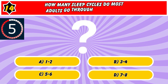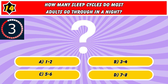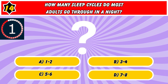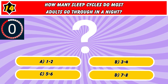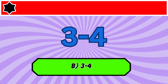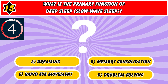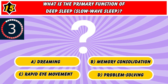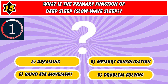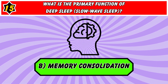How many sleep cycles do most adults go through in a night? Three to four. What is the primary function of deep sleep, slow-wave sleep? Memory consolidation.